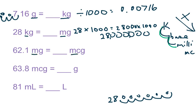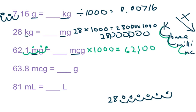For the next one, I'm going from a milli to a micro. You're still going down, so when you go down you multiply. Since you're going milli to micro, you're only going one step, so you multiply by 1,000. If I move the decimal, I move it one, two, three places to the right and add zeros. The answer is 62,100.